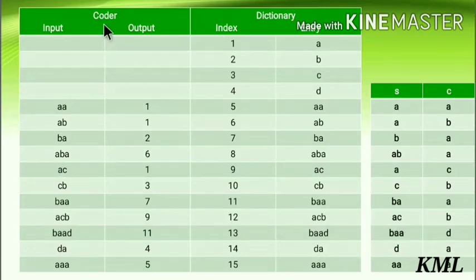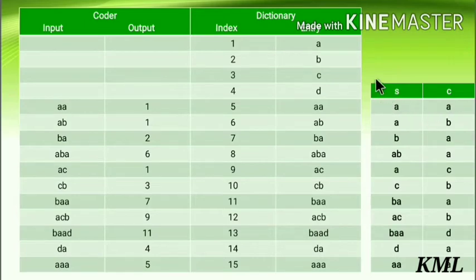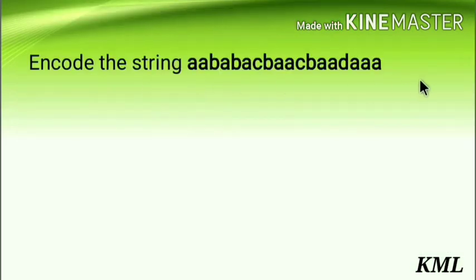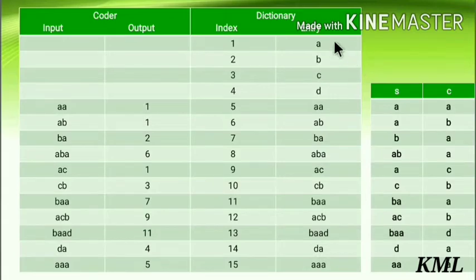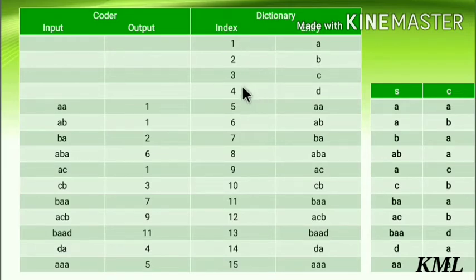Here I have the table — the coder dictionary with two columns: input/output and index/entry. There is also a separate table for the two pointers S and C. First, find all unique letters from the input string — here you have a, b, c, and d. Sort them in alphabetical order and write them in the entry column as a, b, c, d, assigning indices from 1 to 4.